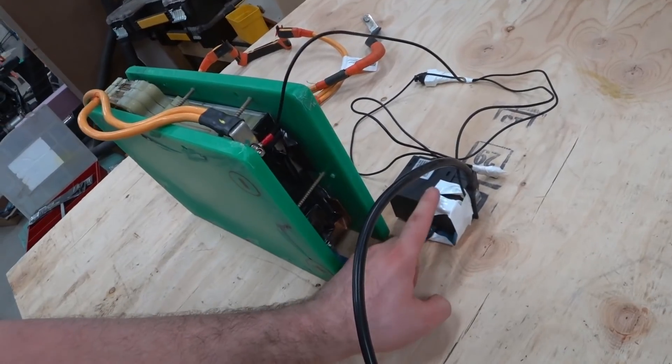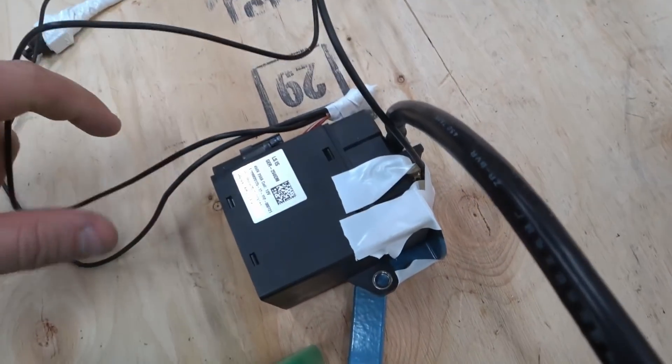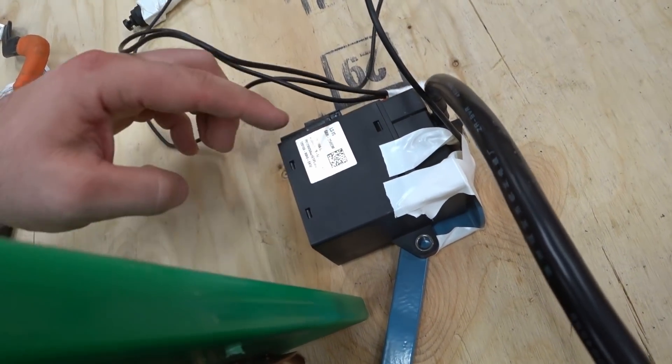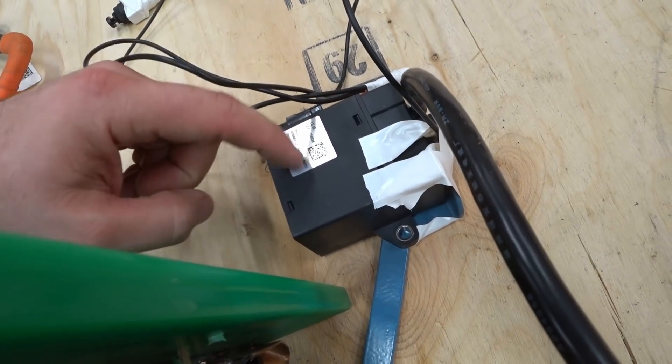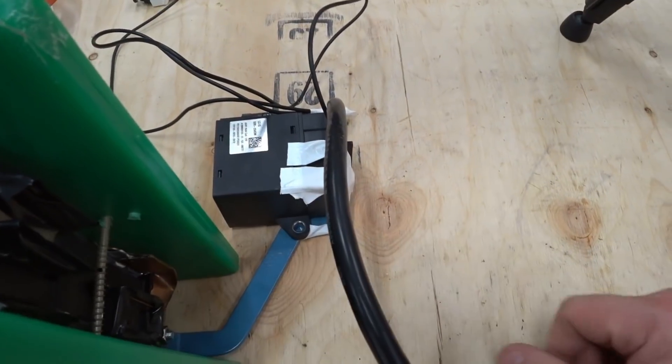Over here, this big component is actually a relay from the Smart for Two electric car. And this guy is rated for 250 amps continuous. It has a little 12 volt coil that moves the big plunger mechanism.